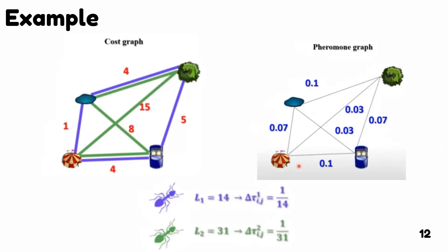Now, here's a question: suppose we have a red ant that wants to travel to the nest — what path will it take? The red ant will sense the pheromone level on each available line: 0.07, 0.01, and 0.03. It will most likely take the path with the highest pheromone level, which is 0.07, since that indicates the shortest and most-traveled route. And that's it for us today — thank you all very much.